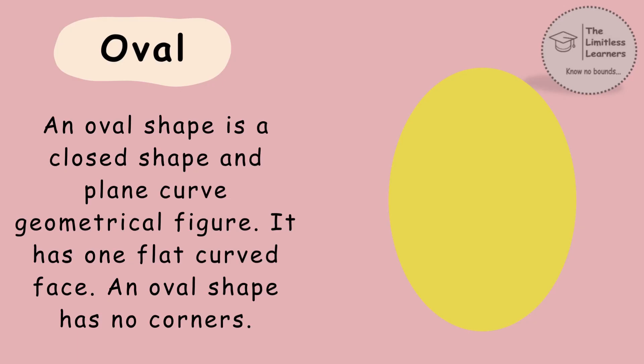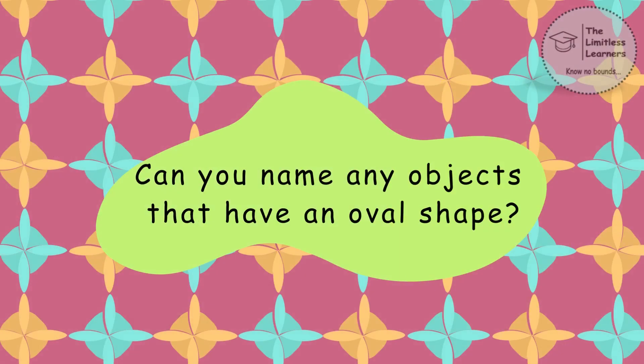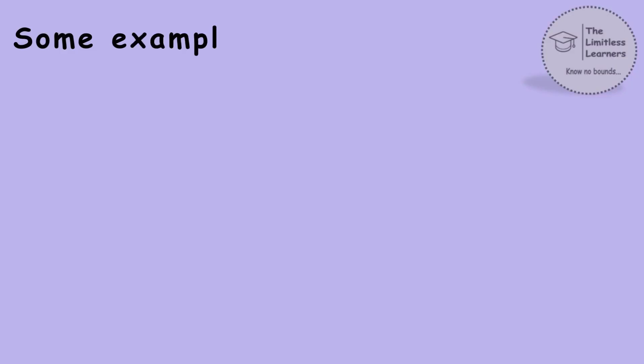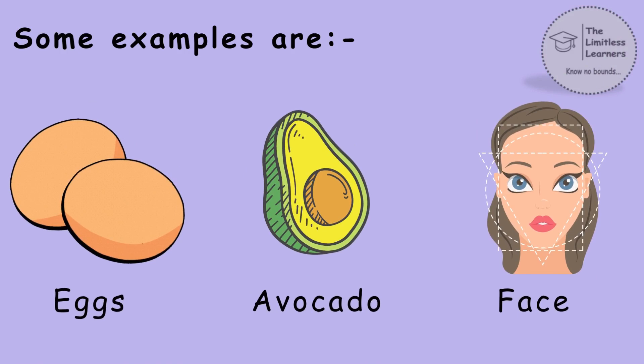Oval. An oval shape is a closed shape and plain curved geometrical figure. It has one flat curved face and no corners. Can you name any objects that have an oval shape? Some examples are eggs, avocado and face.